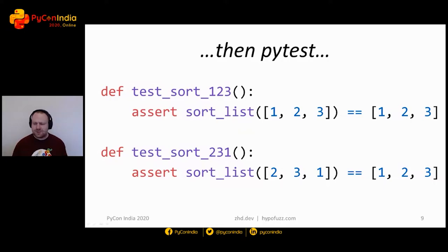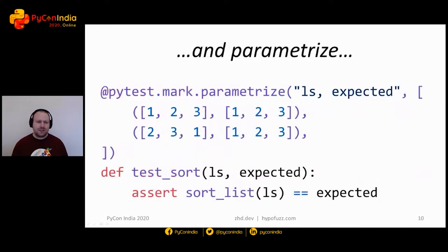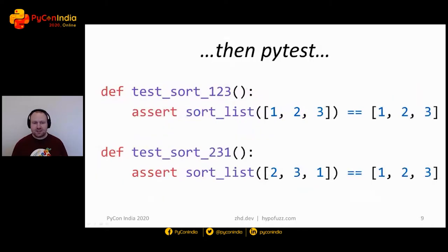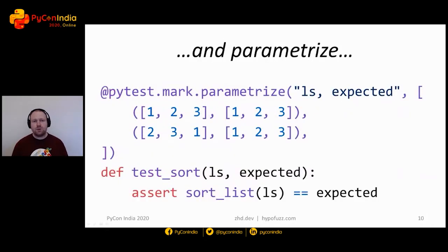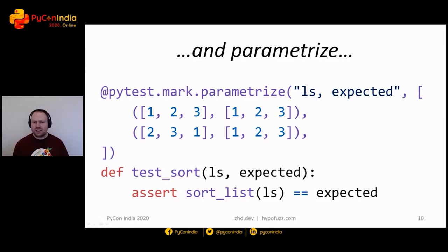We're probably told we shouldn't repeat ourselves as software engineers. And so because our assertions are basically the same, we can put that into a parameterized test where we list out the arguments to the function and the expected results. Then we can check that with a single test body.